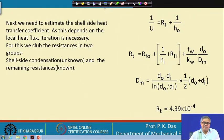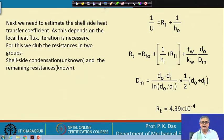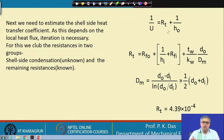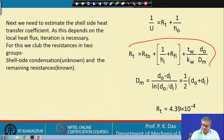Next, we need to estimate the shell-side heat transfer coefficient, that is the tube-outside convective heat transfer coefficient due to condensation. Since this depends on the local heat flux, iteration is necessary. For this, we club the resistances in two groups: the shell-side condensation resistance, which is unknown and a function of delta T_w, and the remaining resistances, which are known.